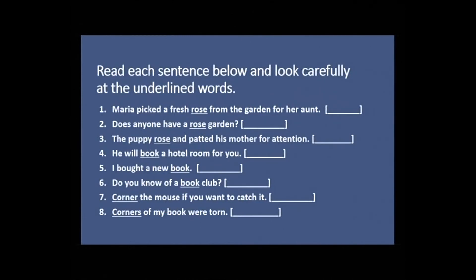Dear students, read each sentence below and look carefully at the underlined words. These sentences show the same word used as different parts of speech. For example, 'rose' appears in three sentences, 'book' in three sentences, and 'corner' in three sentences. Observe how the same word can be used as a noun, adjective, or verb. Let us do it together: 'a fresh rose' — rose as noun; 'have a rose garden' — rose as adjective; 'the puppy rose' — rose as verb.